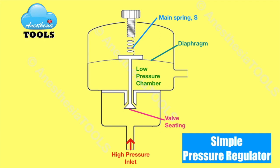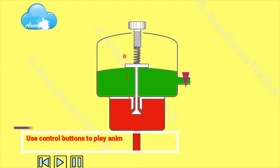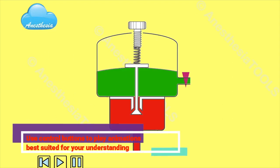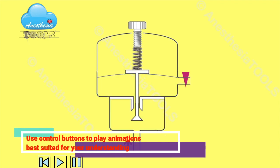When there is sufficient increase in pressure, the diaphragm moves and the valve closes. The pressure at which the valve closes can be preset by adjusting the screw and altering the tension in the spring. Now let us see the graphical illustration of the working principle of the pressure regulator.